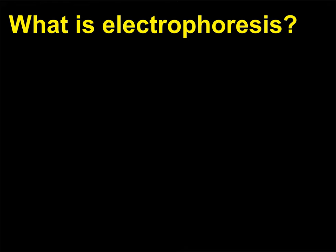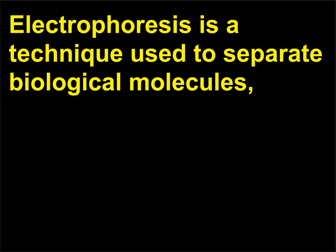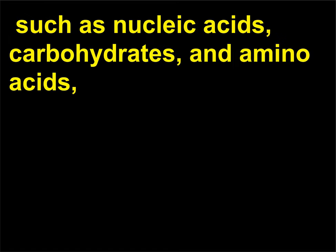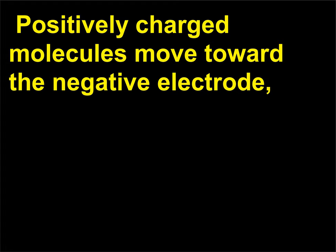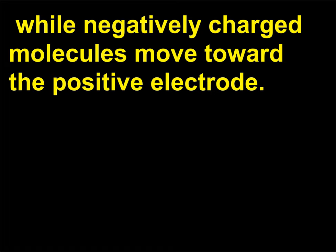What is electrophoresis? Electrophoresis is a technique used to separate biological molecules such as nucleic acids, carbohydrates, and amino acids, based on their movement due to the influence of a direct electric current in a buffered solution. Positively charged molecules move toward the negative electrode, while negatively charged molecules move toward the positive electrode.